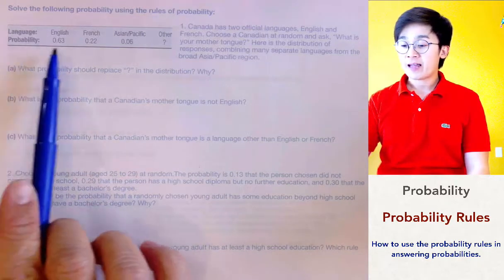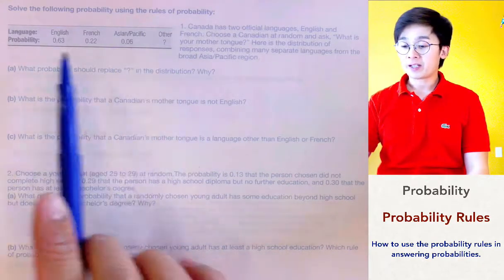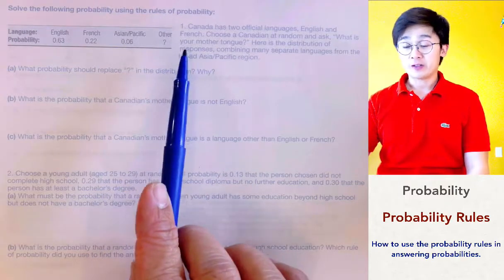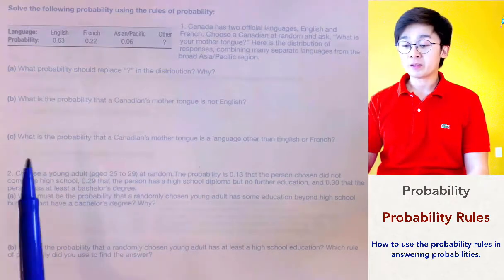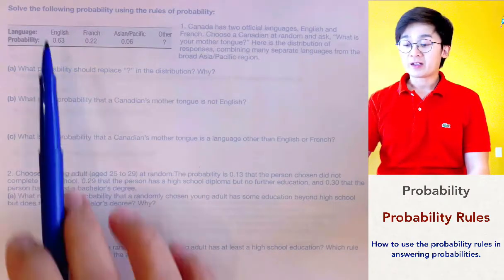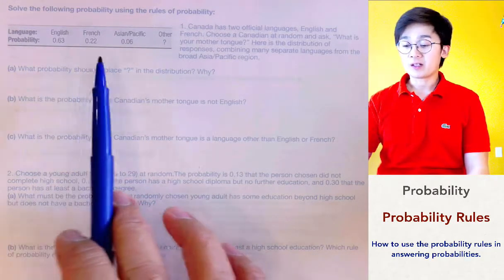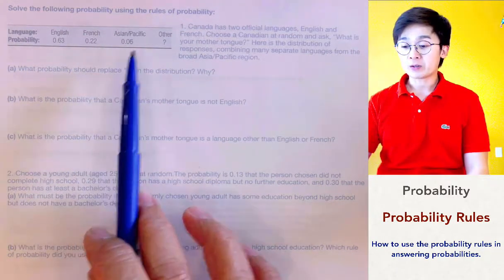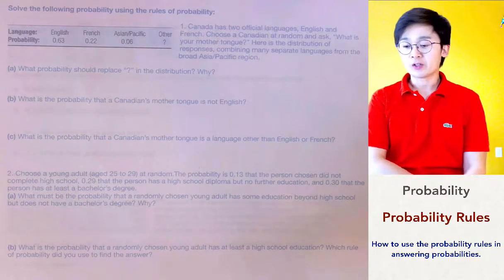These are the languages listed in the table: English, French, Asia-Pacific, and others. The probability or percentage of people having English as their mother tongue is 0.63, French is 0.22, Asian-Pacific is 0.06, and others is the question mark.